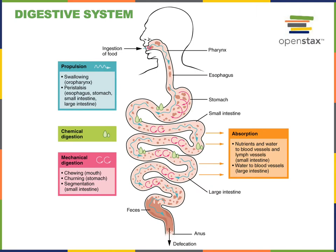The major functions of the digestive system include ingestion of food — taking food in — which brings food into the mouth. After bringing food into the mouth we can start the process of digestion, which is breaking down food into smaller molecules or smaller particles.